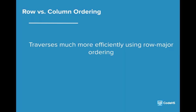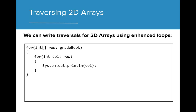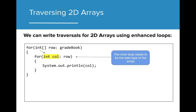It's important to note that while column ordering can be useful depending on the circumstance, Java traverses more efficiently using row major ordering. We will explore this more in one of the exercises to follow. We can also write traversals using enhanced for loops. The outer loop needs to be an array data type to access each array within the 2D array, and the inner loop needs to be the data type of the array being accessed. In this case, because the array stores int values, the inner loop should be initialized to an int value.